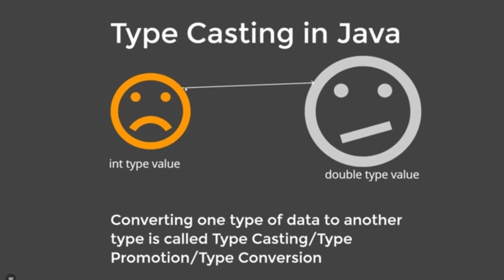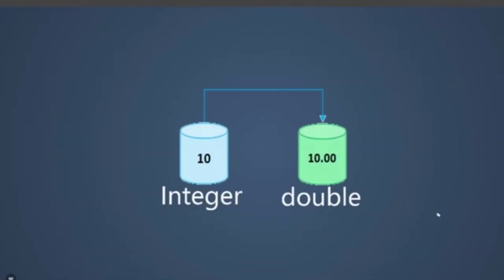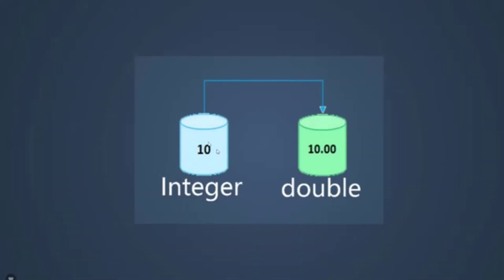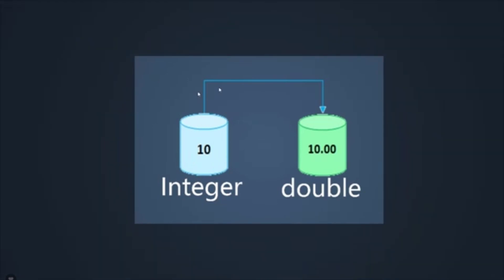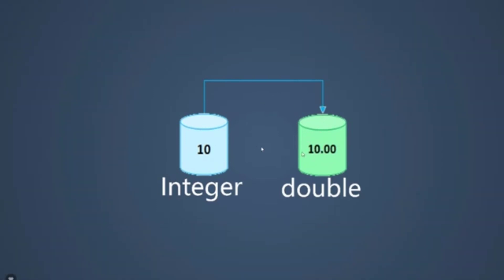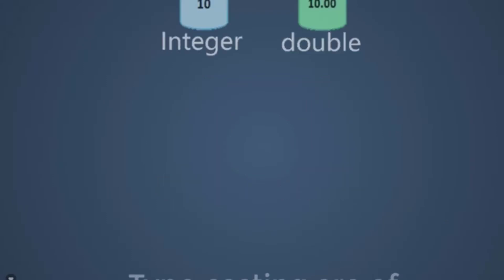For example, if we have an integer type of value, we can convert it into a double type value — that is called typecasting. Here 10 is an integer type of value and we want to convert it into double type. When we convert an integer value to double, the value of 10 is going to be converted into 10.00.